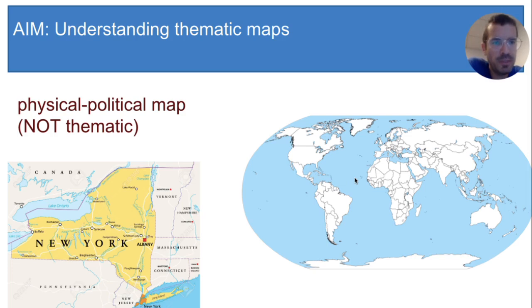These are called physical political maps, and they show natural features, country borders, and maybe capital cities. We will be looking at some of these in class, but mostly we'll be looking at a different type of map, thematic maps.